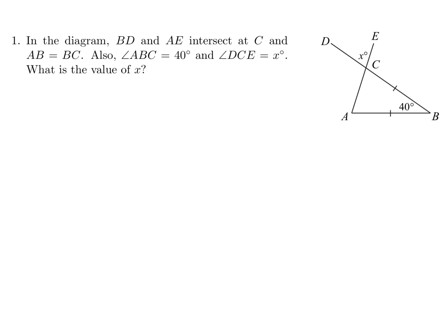Well, if this is an isosceles triangle, which is denoted by those two symbols, then this angle and this angle will be equal. So let's call them Y and Y. That means Y plus Y plus 40 is equal to 180. So 2Y is 140, and therefore Y is 70.